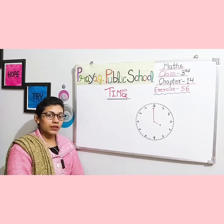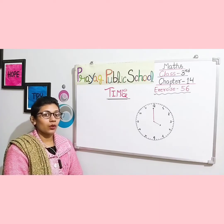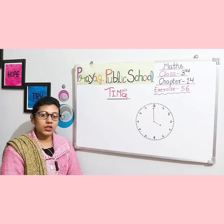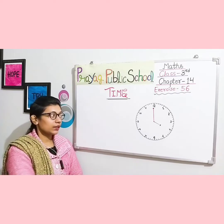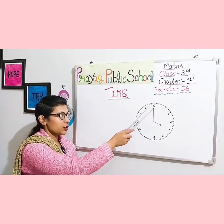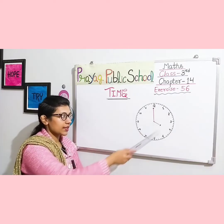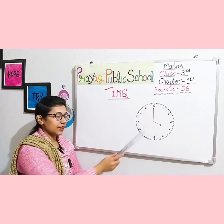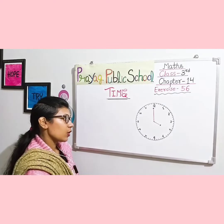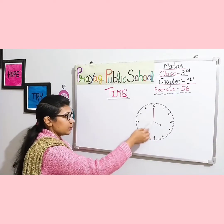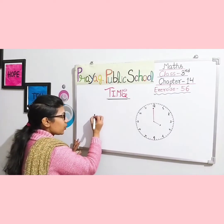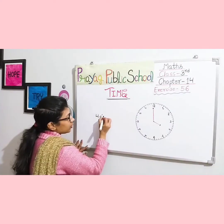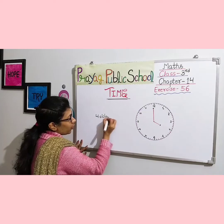One minute equals 60 seconds, and one hour equals 60 minutes. These are basic things we learned in our previous session. We also learned how to read and write the time when the minute hand is at 12. The hour hand can be at any number. For example, if the hour hand is at 4 and the minute hand is at 12, the time is 4 o'clock, written as 4 o'clock.